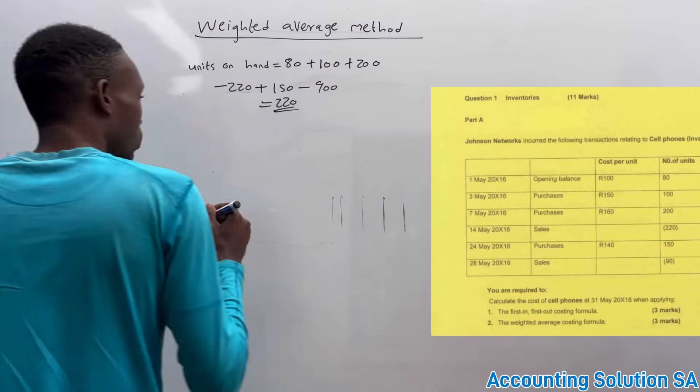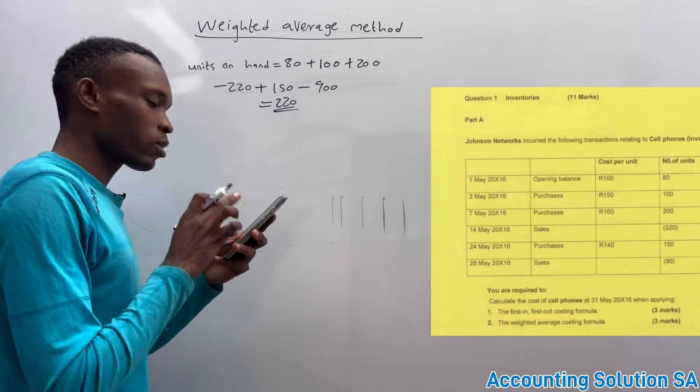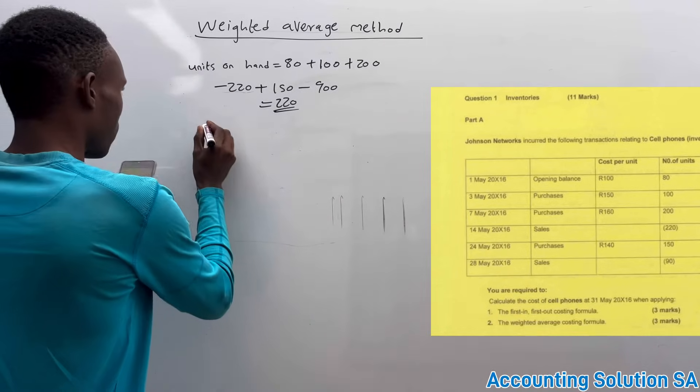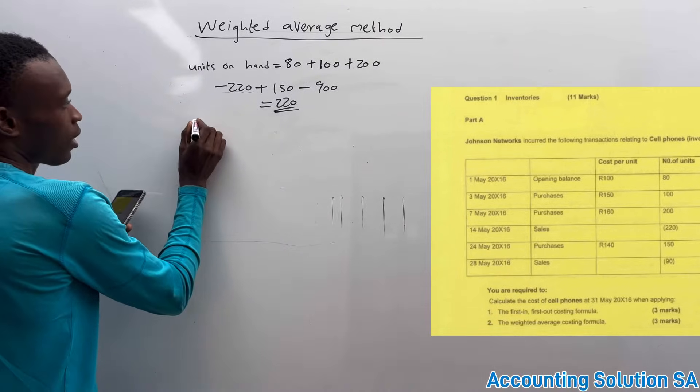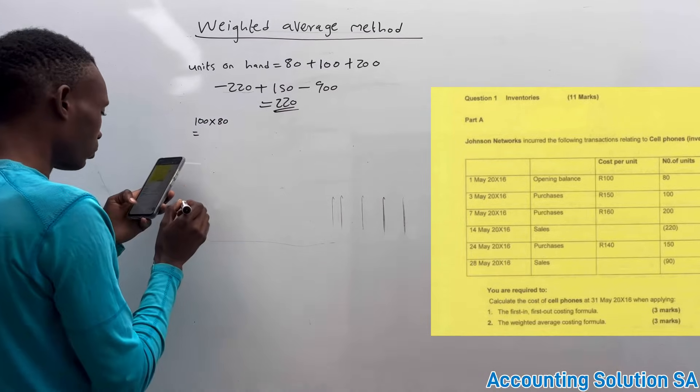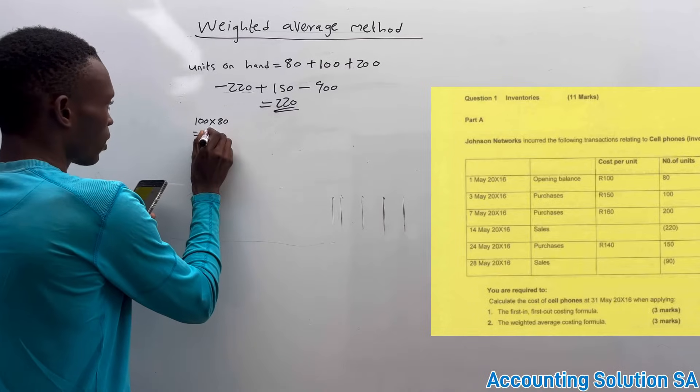Let's take opening balance. We must get the total figure. We have to say 100 multiply by 80, and then it's gonna give you an amount of 8,000.